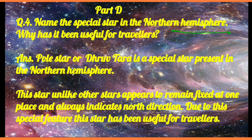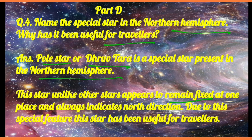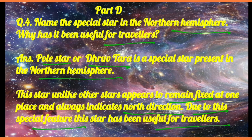In the northern hemisphere we can see the Pole Star — Dhruvtara — which is present in the northern hemisphere. Unlike other stars, this star appears to remain fixed. Its special property is that it is fixed in its position because it lies on the axis of rotation of the Earth. It always indicates the north direction, and due to this special feature this star has been useful for travelers in the past.